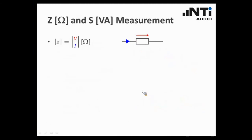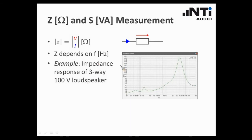How can we measure, how can we quantify the impedance Z or the apparent power S? Let us start with the impedance. Impedance is defined as the voltage divided by the current, so the voltage across the load divided by the current that flows through the load. What is important to know is that this impedance Z depends on the frequency. Let me give you an example on that. Here I have plotted the impedance response of a 3-way loudspeaker in a 100V system. You can see here on the y-axis the ohm, the complex impedance, and here on the x-axis is the frequency. You see the dependency of the impedance from the frequency.